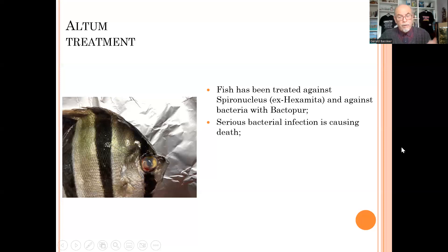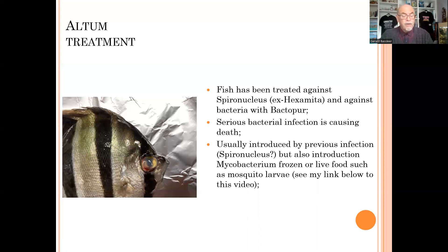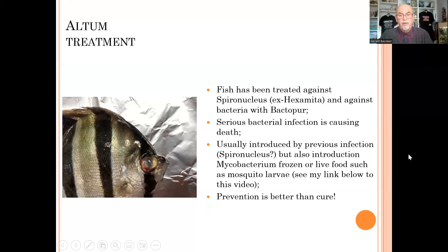I explained this before in my Pelvicachromis case — you can see a few cases before this one. Usually that disease is introduced by a previous infection like parasites, but introduction can also occur with mycobacterium — in this case by supplying or feeding the fish with frozen or live fish food. I have different videos on this matter that explain what fish food can do to the health of your fish. You can see the link below in my video channel.